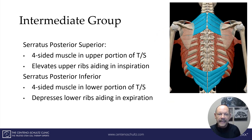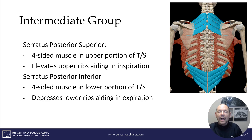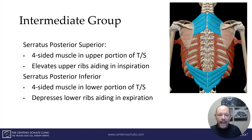The next group is the intermediate group, composed of two muscles: the serratus posterior superior and the serratus posterior inferior, depicted here. The superior elevates the ribs and helps with inspiration, whereas the serratus posterior inferior is located at the lower thoracic and lumbar spine, pulls the ribs down, aiding in pushing the air out — otherwise known as expiration.